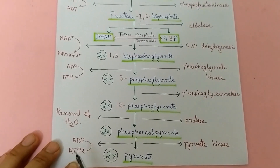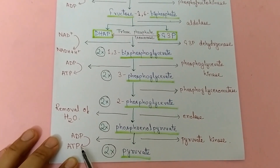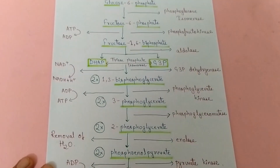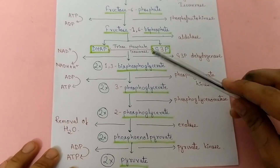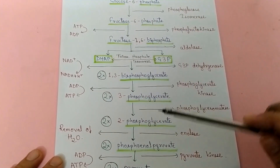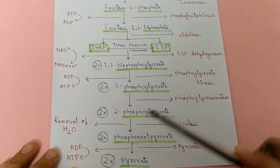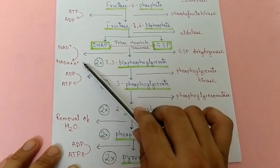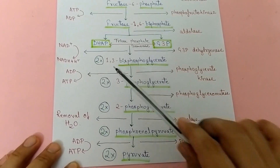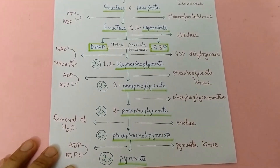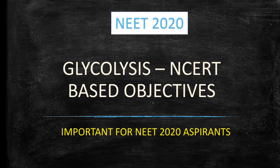In this total reaction we generate 4 ATP and we spend 2 ATP, so the net gain of ATP is 2 ATP. We also get 2 NADH molecules which will be converted into 6 ATP later on. Now we will discuss some NCERT-based objective questions from the topic of glycolysis.